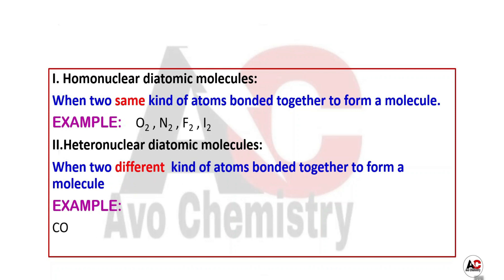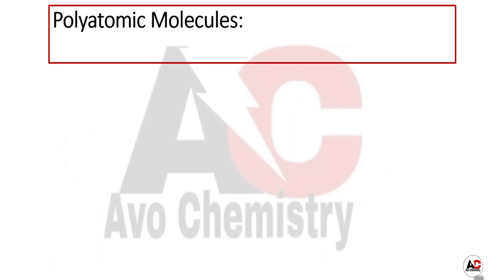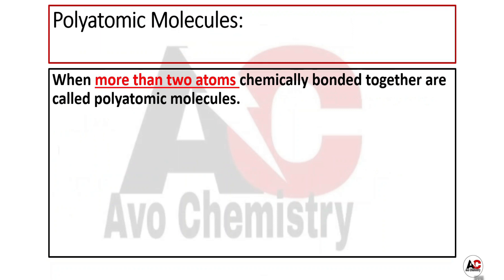Polyatomic molecules are molecules when more than two atoms are chemically bonded together. For example, carbon dioxide CO2, water H2O, methane CH4, benzene C6H6, naphthalene, sugar, glucose.